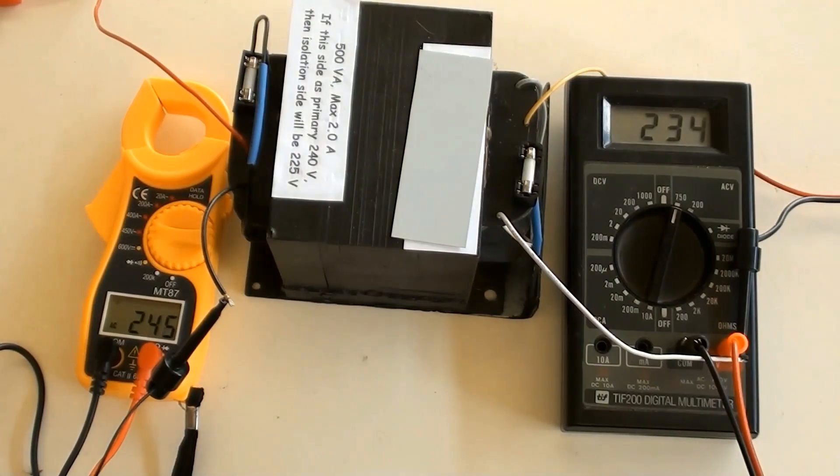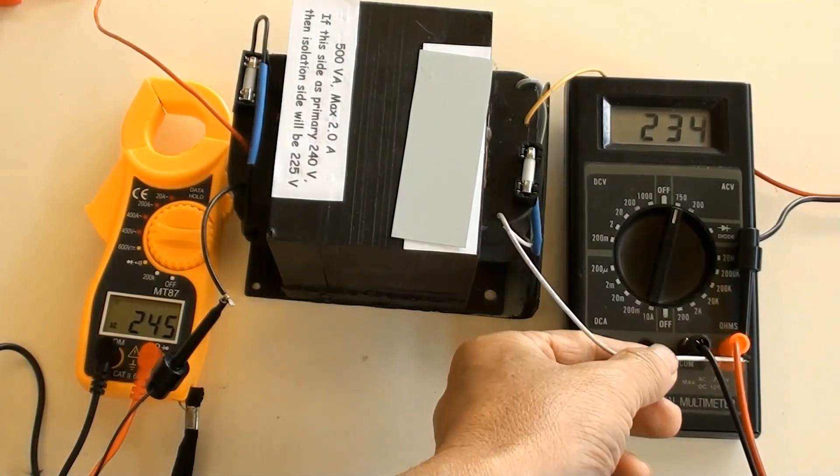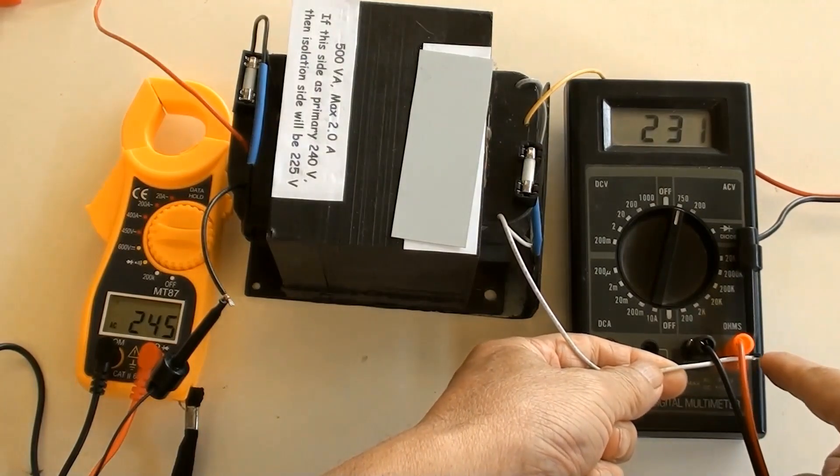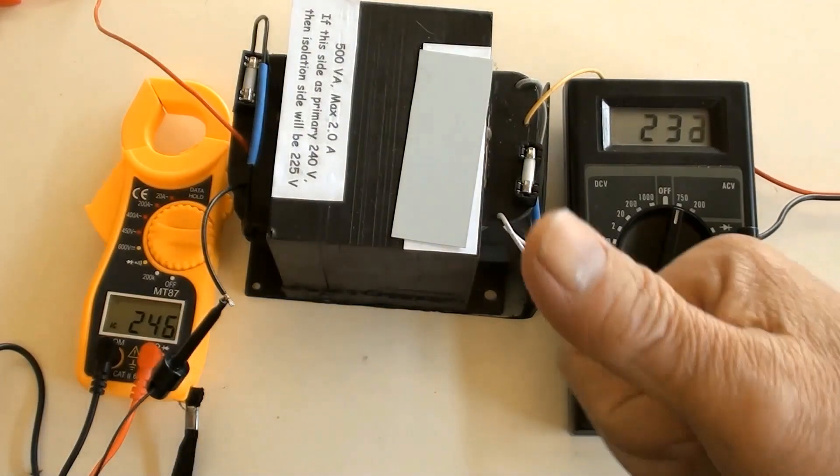The reason to use an isolation transformer is the safety concern. Do not touch the live wire, otherwise we will get electric shock. However, with an isolation transformer on the isolation side, you can touch any single wire without electric shock. I leave to you the reason.